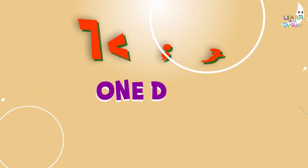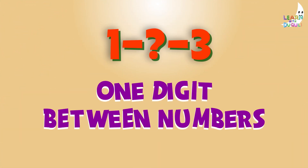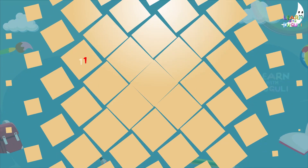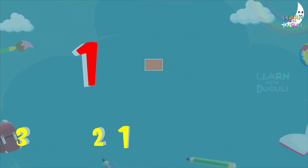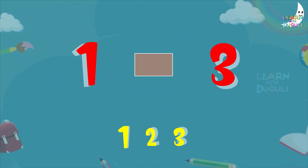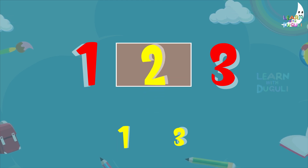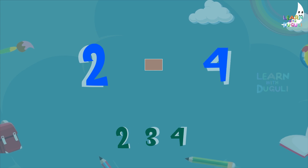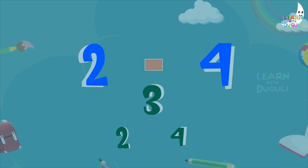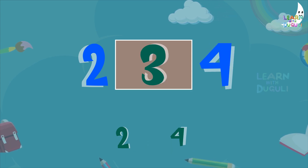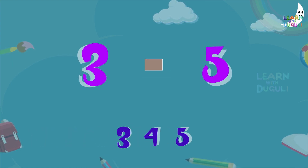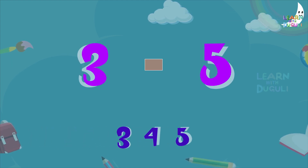One digit between numbers. One and three — between number is two. Two and four — between number is three. Three and five — between number is four.